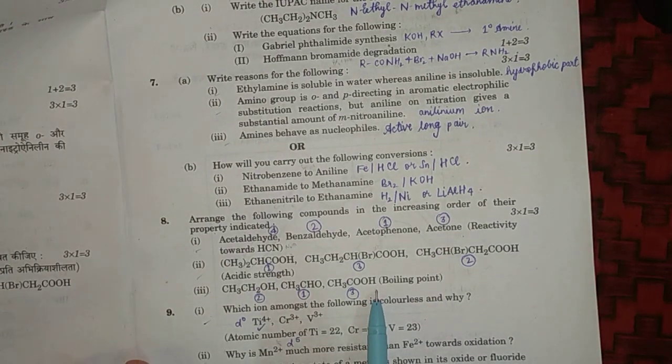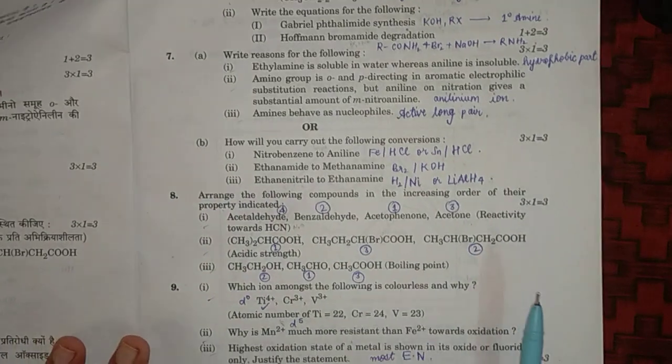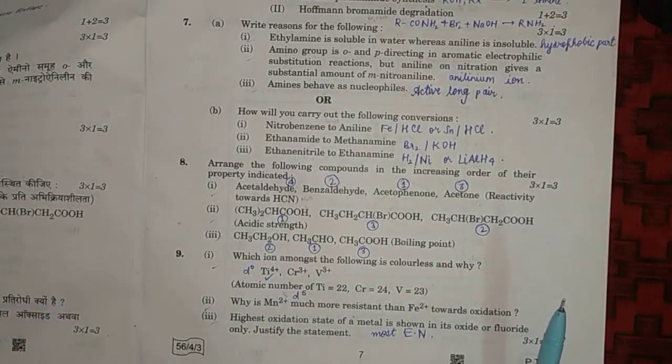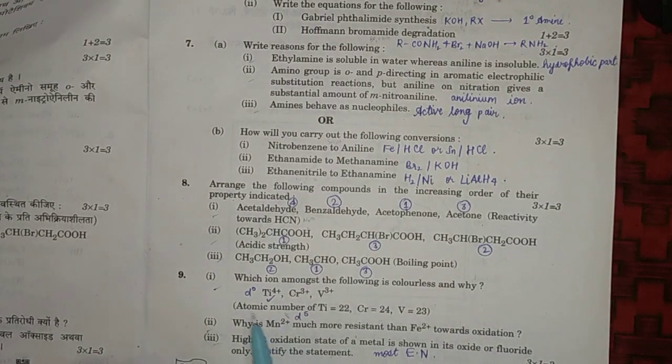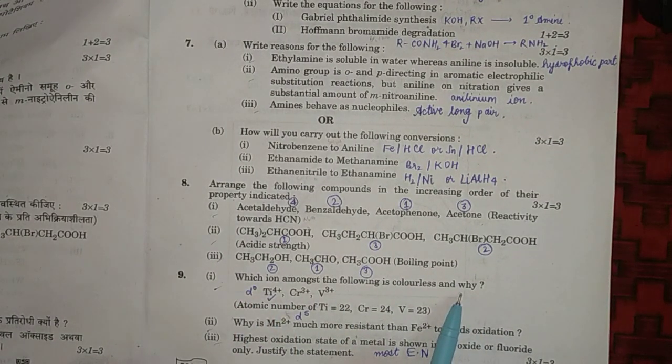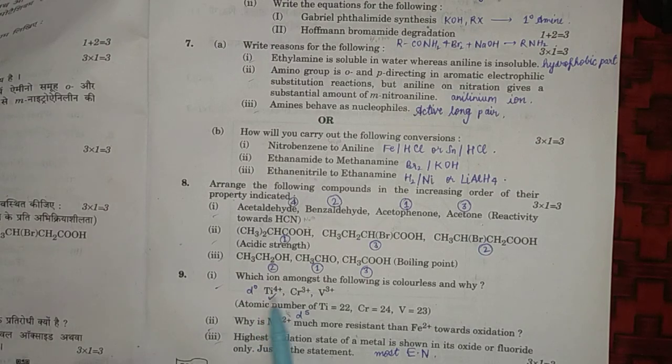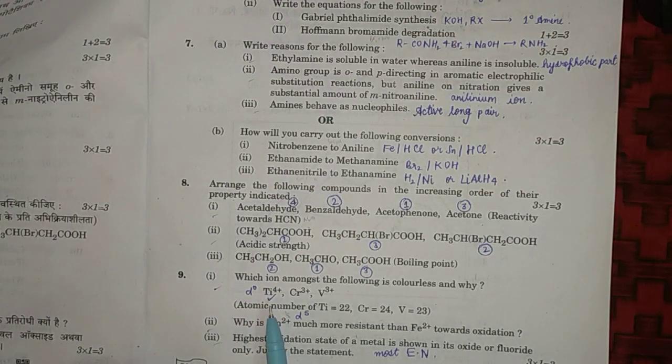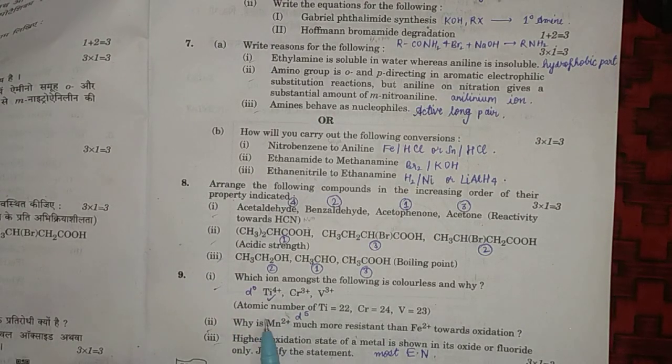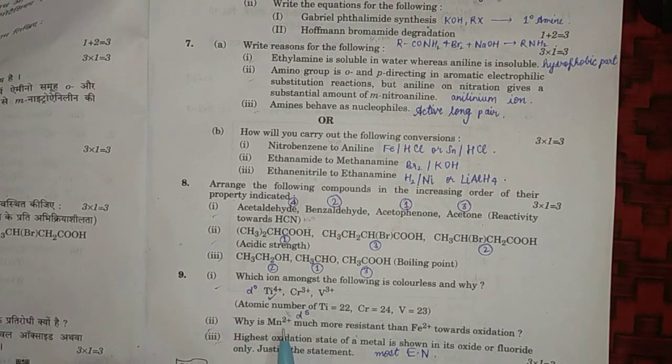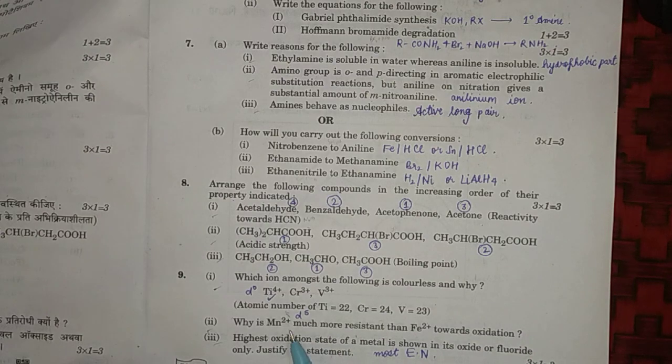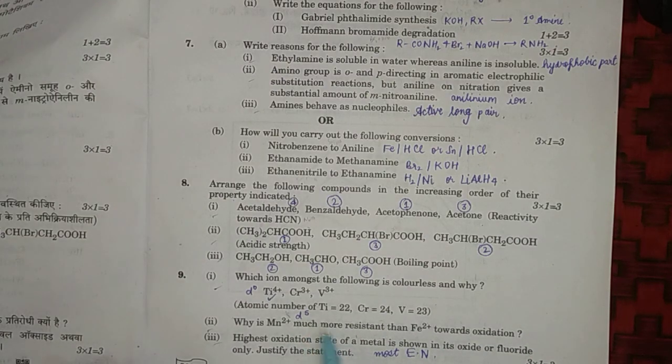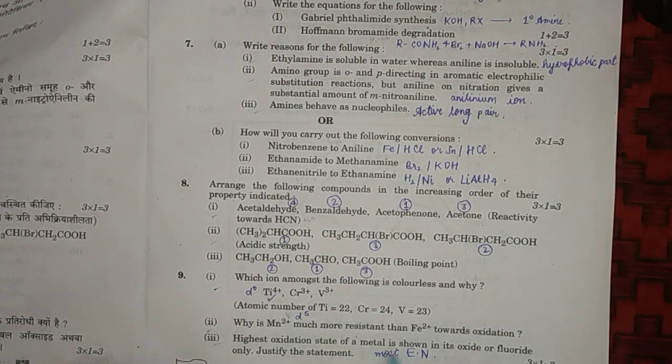Ninth question: which ion amongst the following is colorless and why? Here we can see that Ti+ is colorless because it has d0 configuration. Why is Mn2+ much more resistant than Fe2+ towards oxidation? Because Mn2+ has d5 configuration.